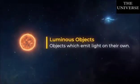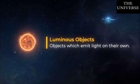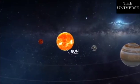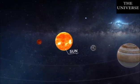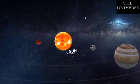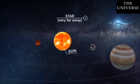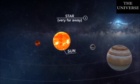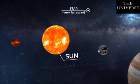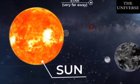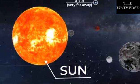Therefore, stars are called self-luminous objects as they emit light on their own. The sun is also a star. The other stars look so small compared to the sun because they are very far away from us, whereas the sun looks bigger and brighter because it is nearer to the earth than the other stars.